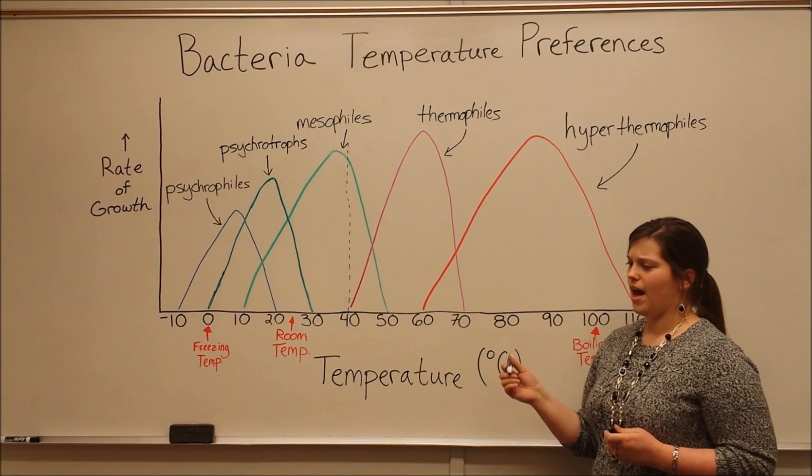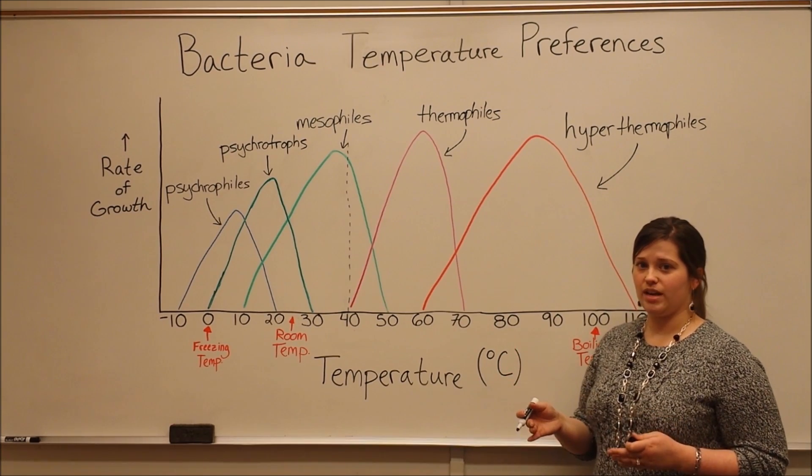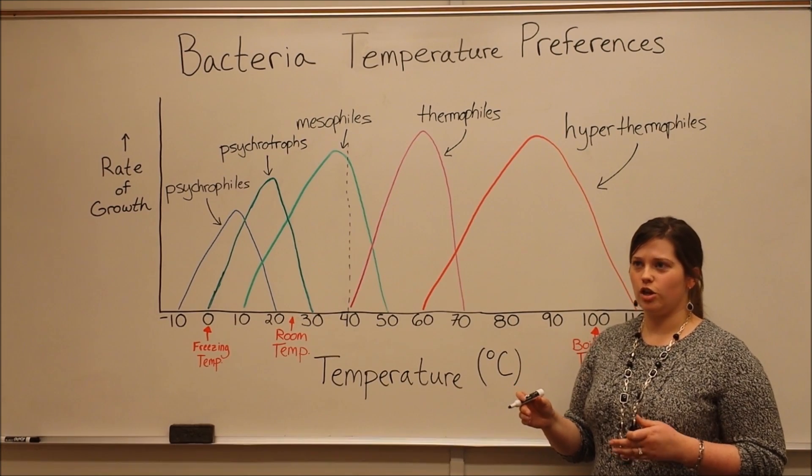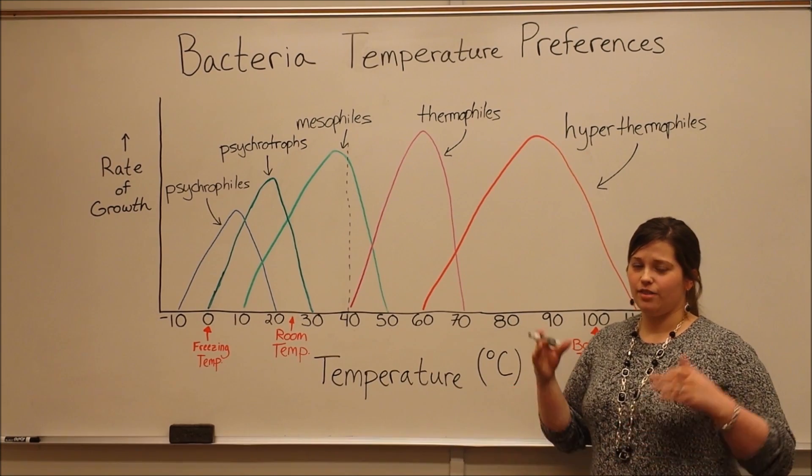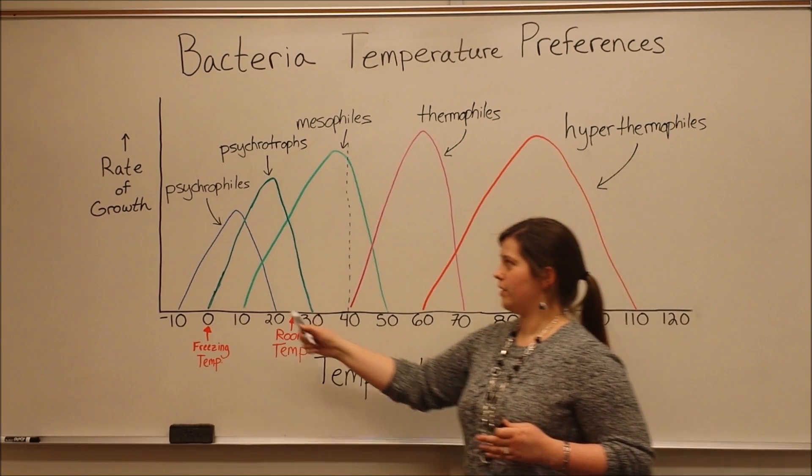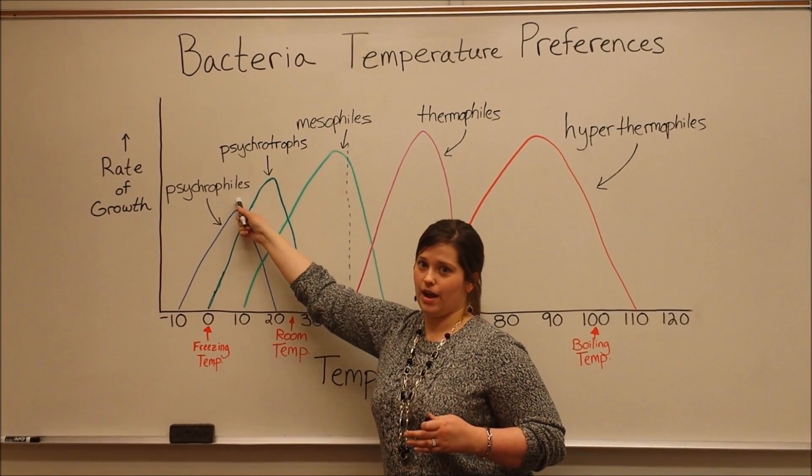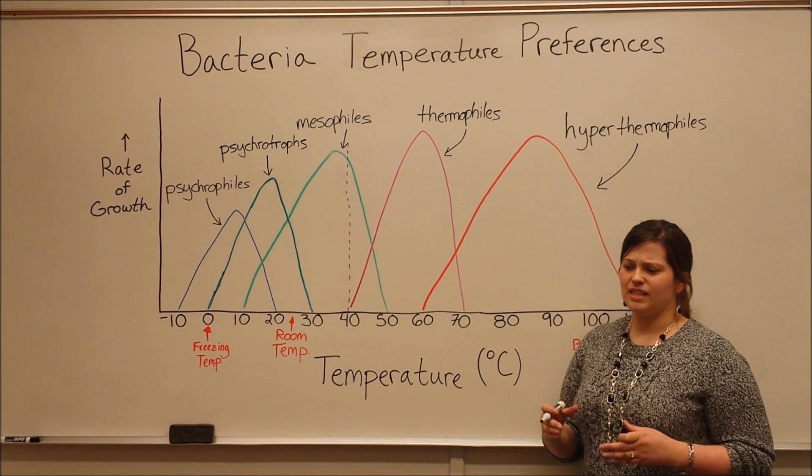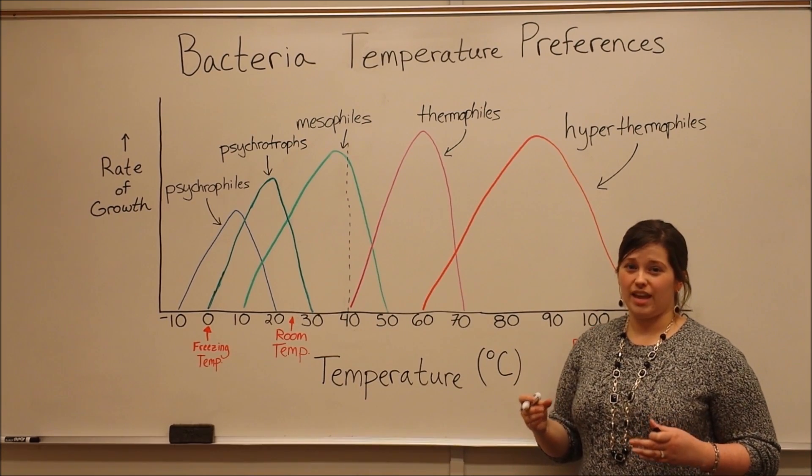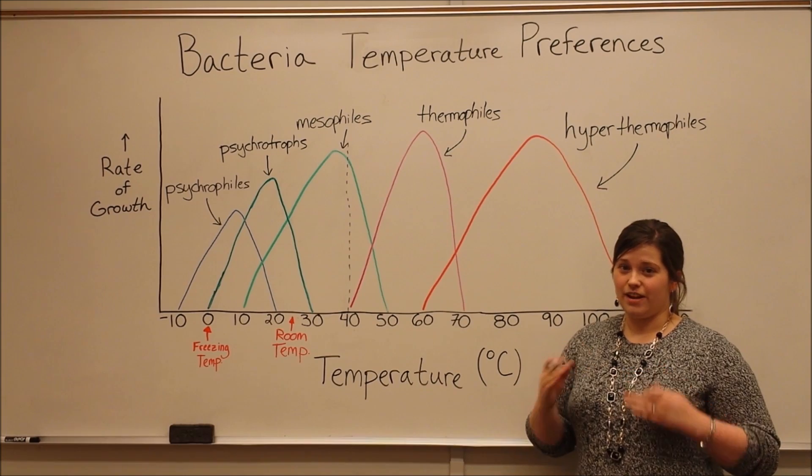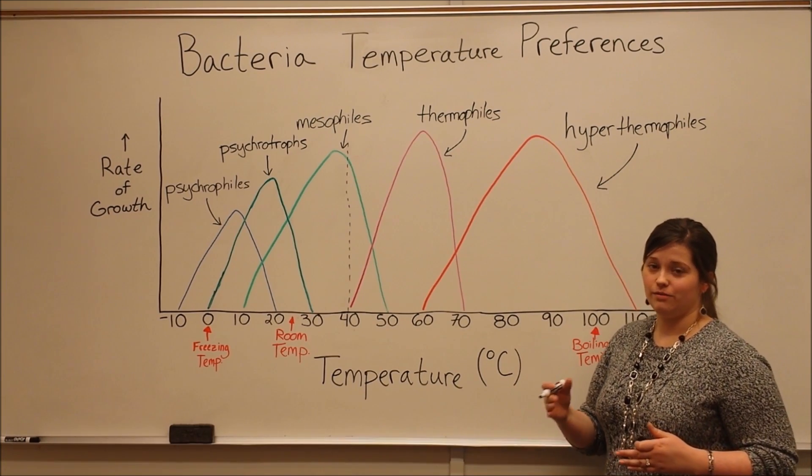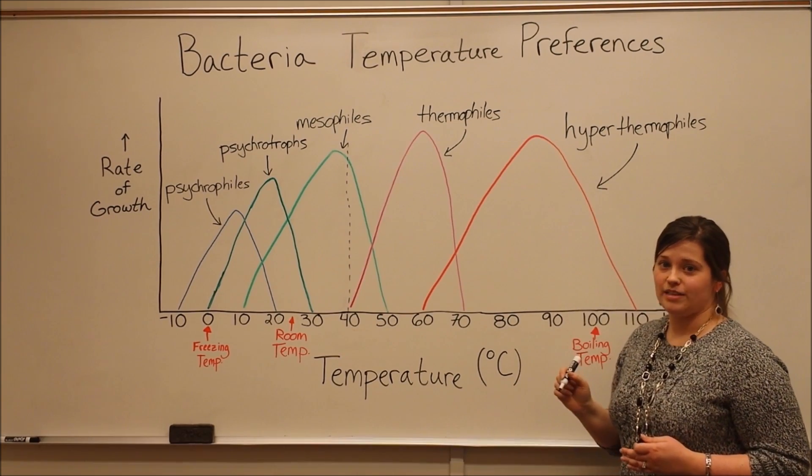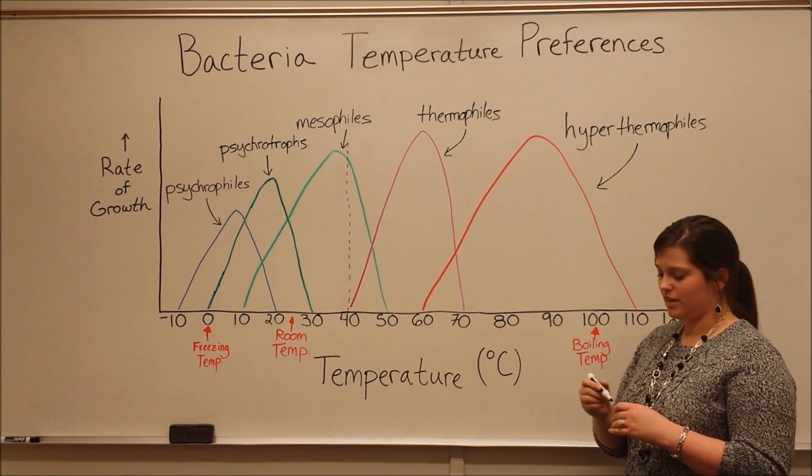These are the bacteria that are growing in hot springs, and also in very deep ocean vents. So in oceans, you have the very, very cold water where, for example, the psychrophiles are living. You also can have these deep ocean vents that are basically the openings of underwater volcanoes. This is very, very hot. You can imagine just how hot volcanoes and magma are. So hyperthermophiles are the bacteria that are living in those conditions.